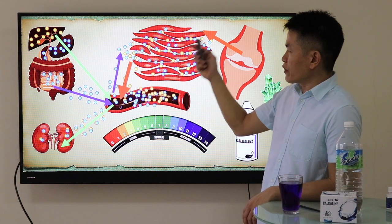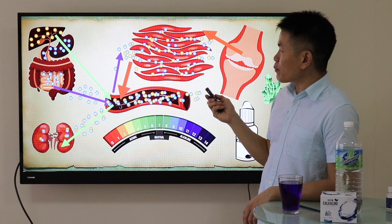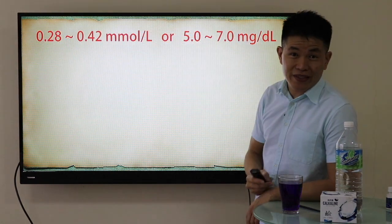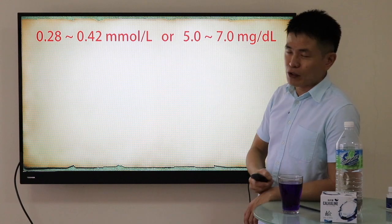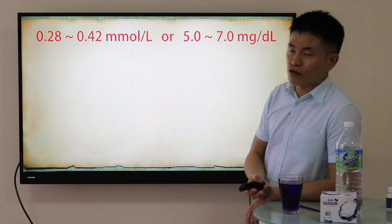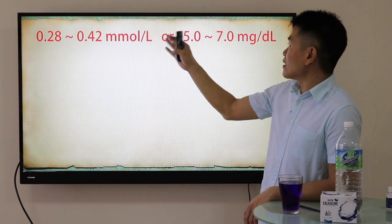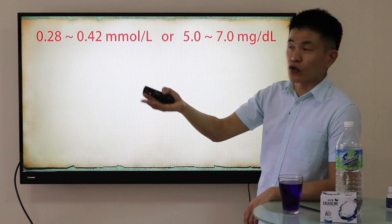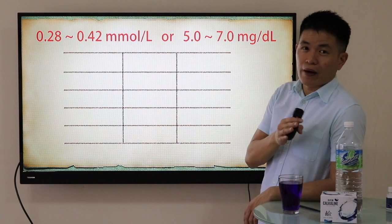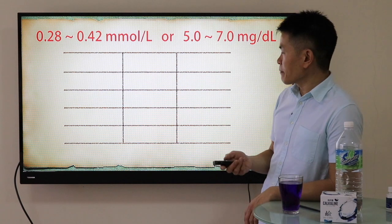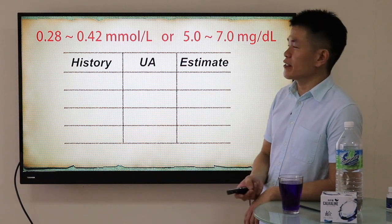The uric acid will slowly seep out from your muscle tissue layer back into the bloodstream. In this early phase, if you go for a blood test, you might see a spike of uric acid in your bloodstream — don't be surprised, this is normal, as it's moving from your joint to the bloodstream. There are two units used: millimole per liter or milligram per deciliter, depending on your clinic's lab test.